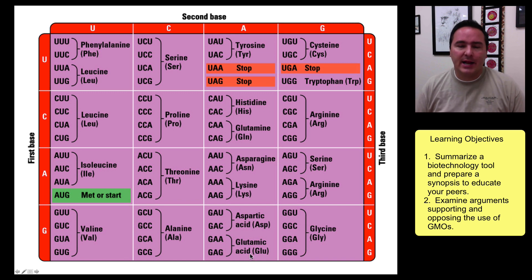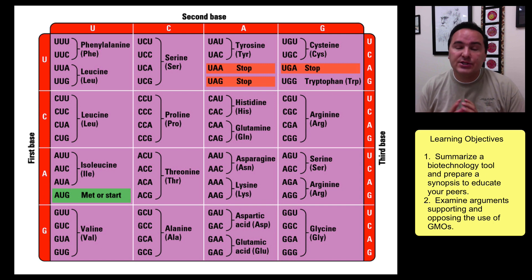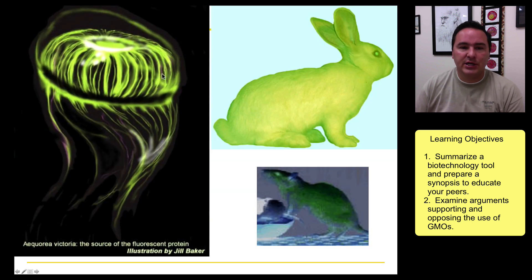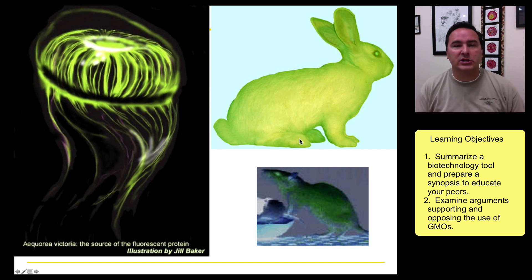Recall that the genetic code is shared among all organisms. There are a few exceptions and changes in some instances, but for the most part the genetic code is the same for all organisms. What that means is that you can take the gene for bioluminescence from a jellyfish and introduce it into genetically engineered bunnies or rats, and they will essentially glow in the dark.